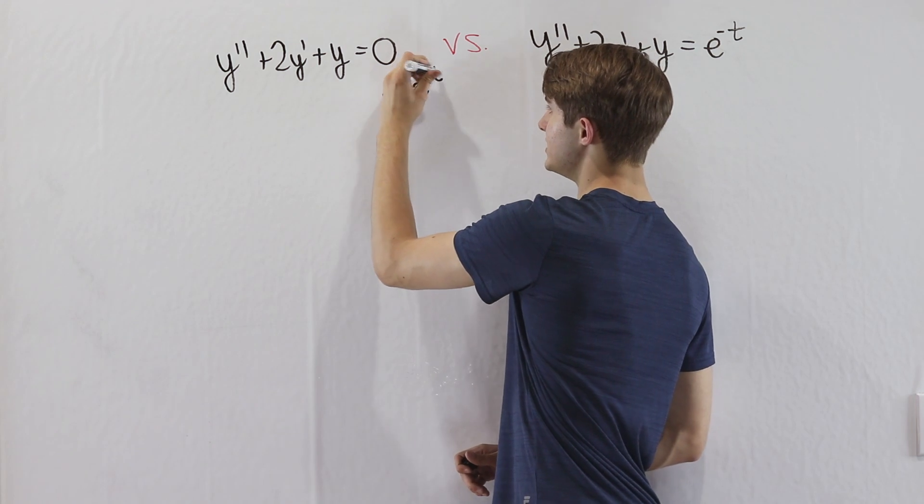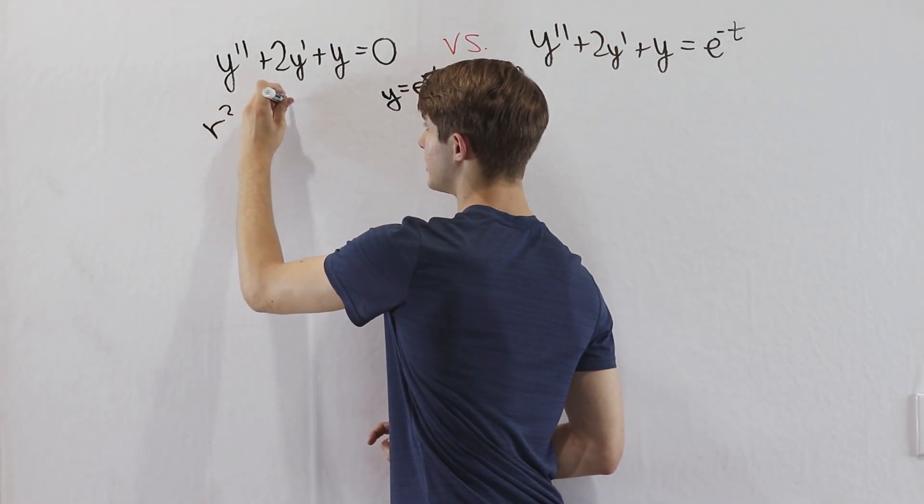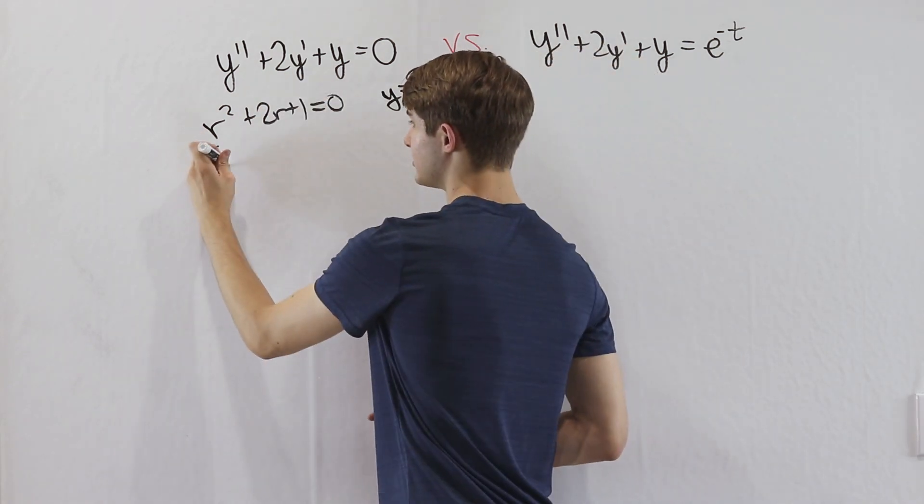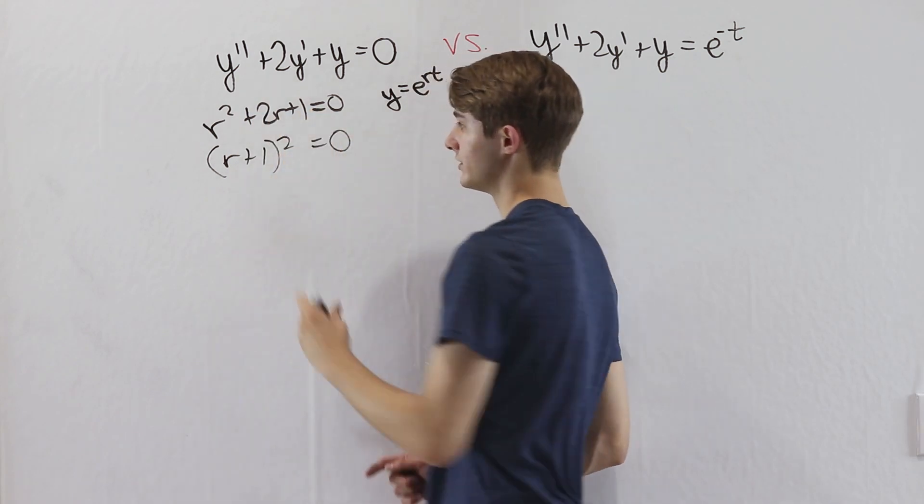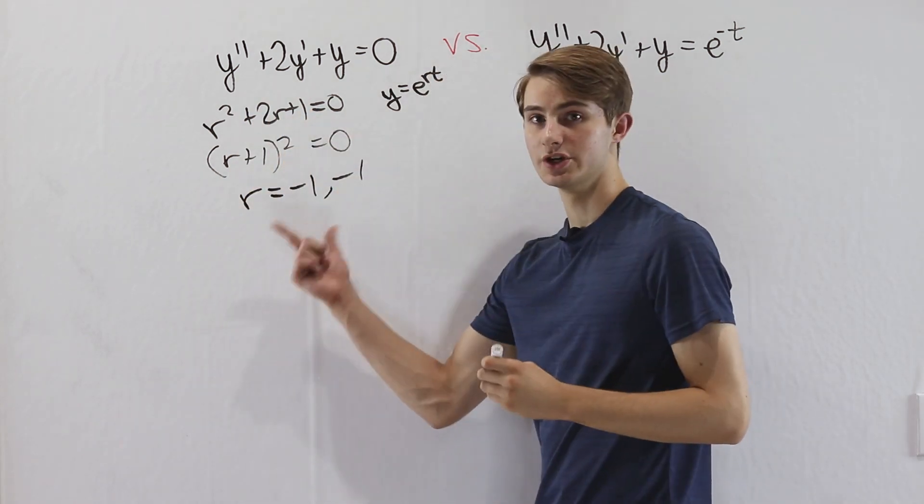We're going to guess that y equals e to the rt. If we plug that in, we'll get that r squared plus 2r plus 1 is equal to 0. We can factor this as r plus 1 squared equals 0, and therefore we have r equals negative 1 as a double root.